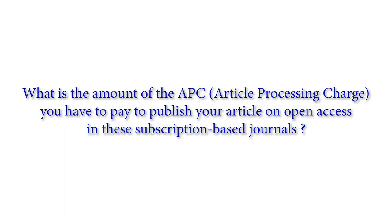What is the amount of the APC, the article processing charge, you have to pay to publish your article on open access in these subscription-based journals? The journals I usually publish in are characterized by APC charges of 2,000 to 4,000 euros. I have the privilege of having an ERC grant, so I can charge those to the grant, although I have allocated a maximum amount of money on the ERC, and so this is also a constraint in terms of the maximum amount that I can pay for open access fees.